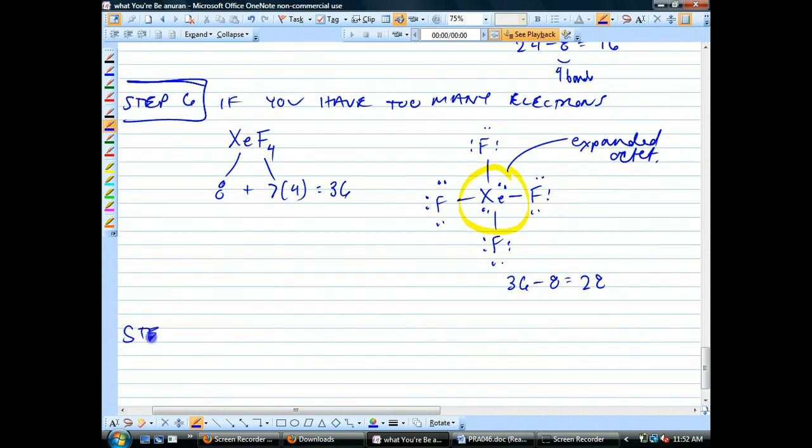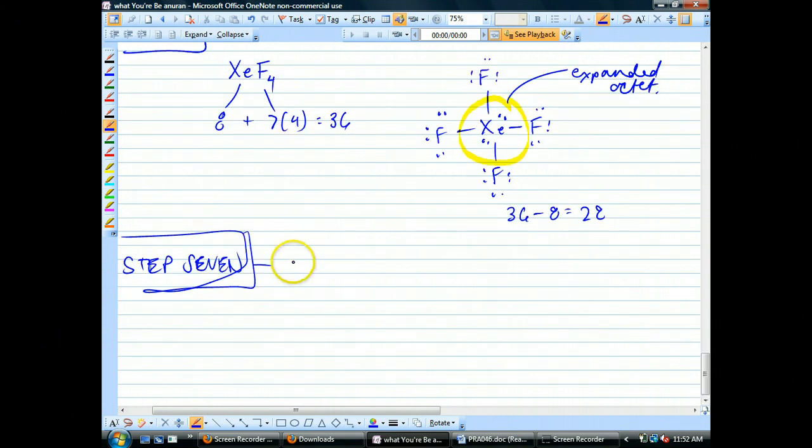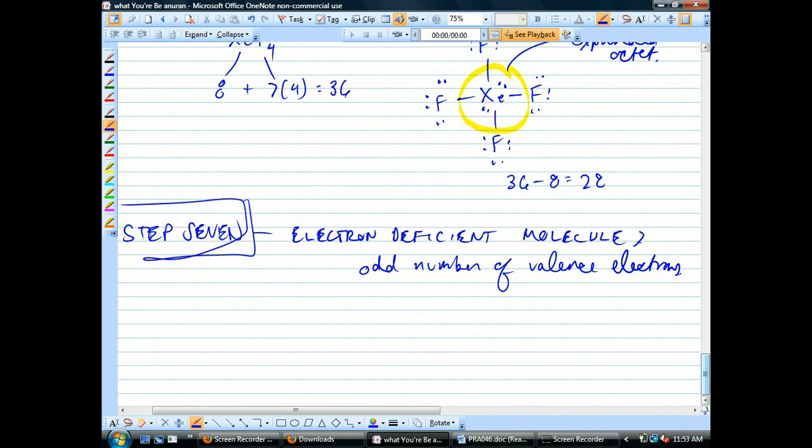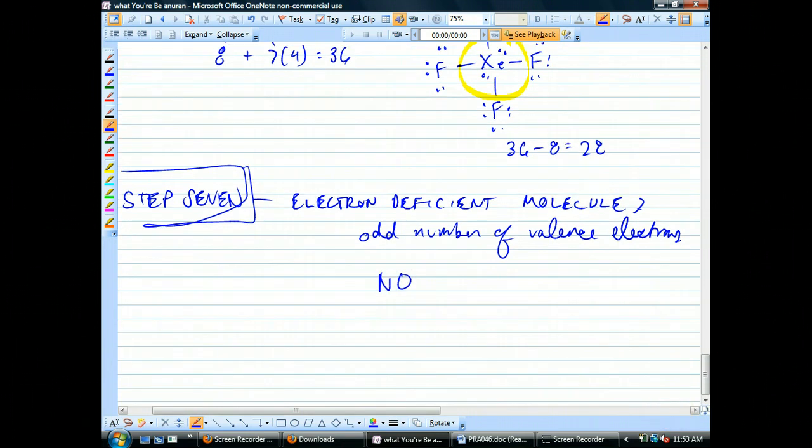The last thing I want to show you is step seven. Check your work. Step seven. Oh, check your work. That's a good one. That's step eight. Step seven is we'll just call them electron deficient molecules. And you know these right away. You know these right away because there's an uneven number. There's an odd number of valence electrons. You know you're going to have a problem with that because, well, that's one way of knowing is when you have an odd number. Is it always true? There might be other cases. But let's look at an odd number. Something like this guy. No. No. Five and six.